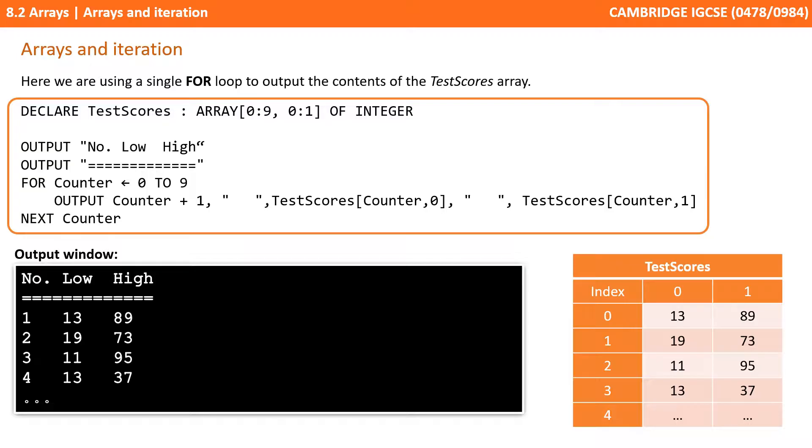What it's doing is outputting the value of the counter plus 1, so that student at index 0 is being called student 1. We're then outputting a few spaces, then the value from the test scores table from the counter row column 0, a few more spaces, and then we're looking at counter row 0 and column 1.